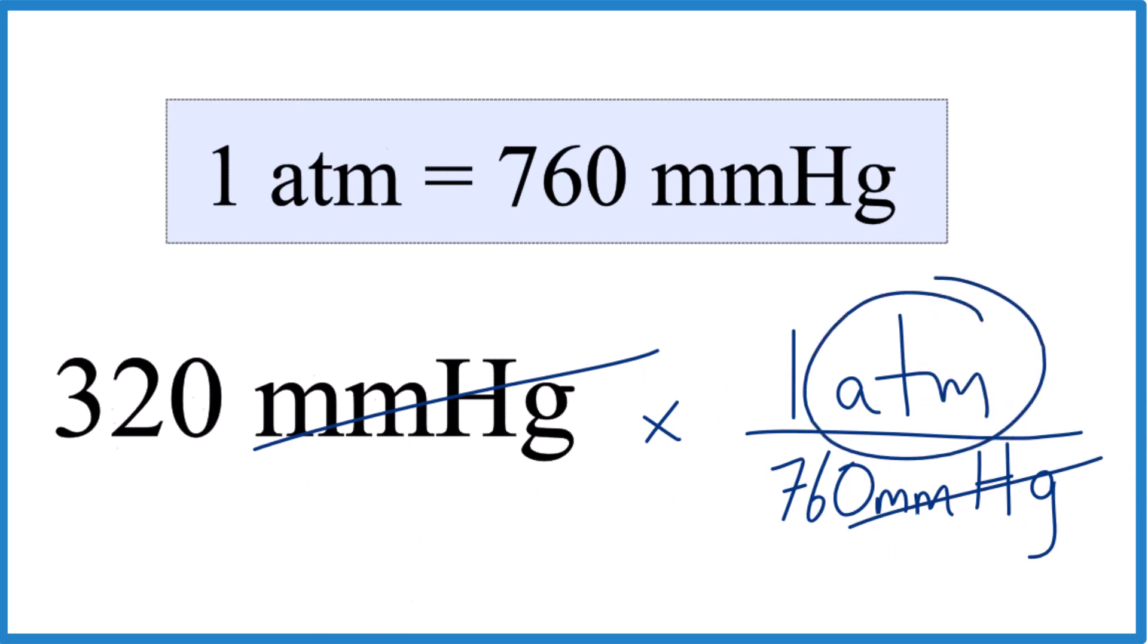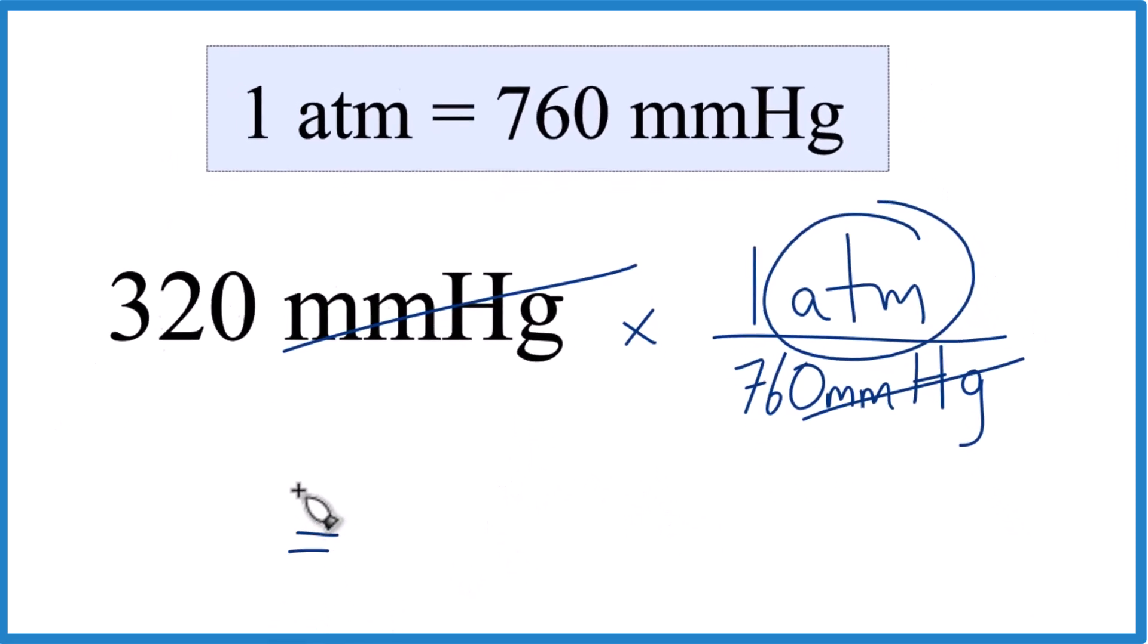So 320 divided by 760, that is 0.4210. Let's leave it at 0.421. The units, atmospheres, because that's what's left after we cancel out the millimeters of mercury.